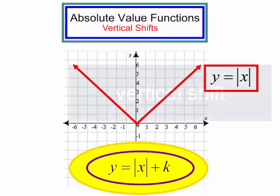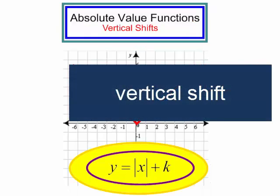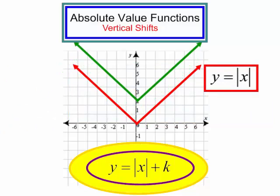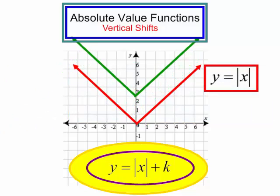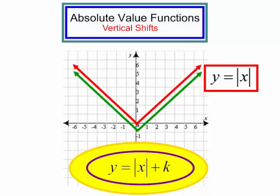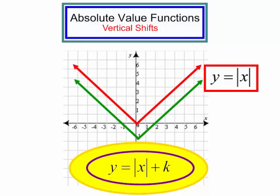We're going to begin talking about the vertical shifts. These are in the form y equals the absolute value of x plus k. If k is positive, the graph will shift up. If k is negative, the graph will shift down.